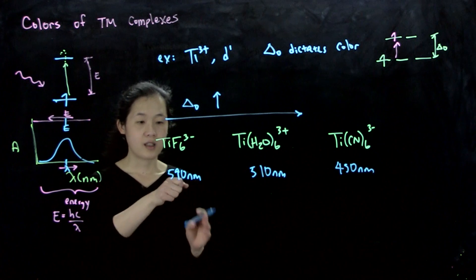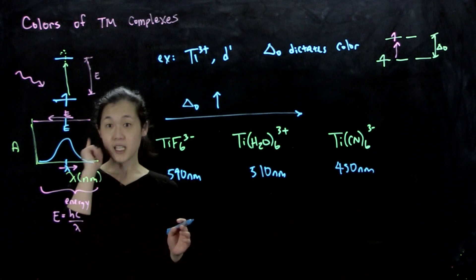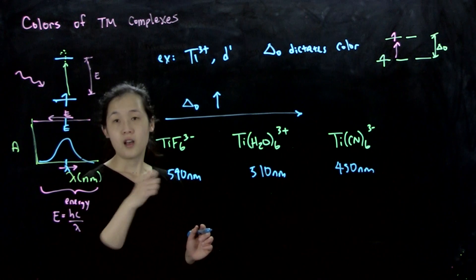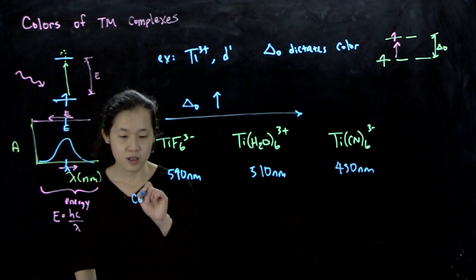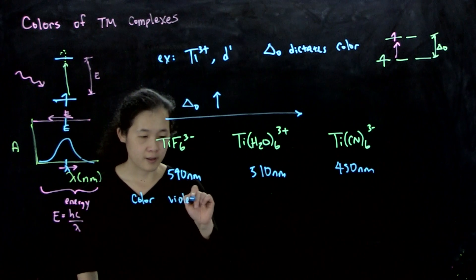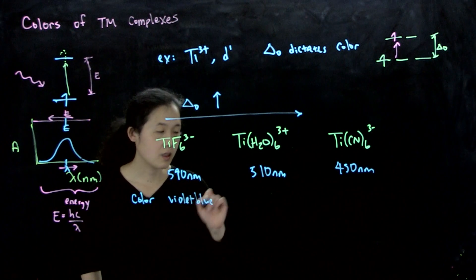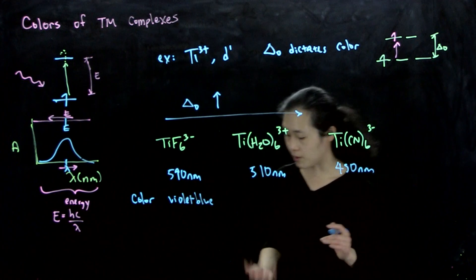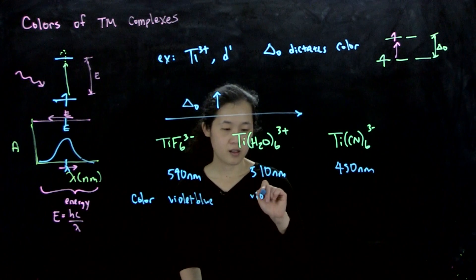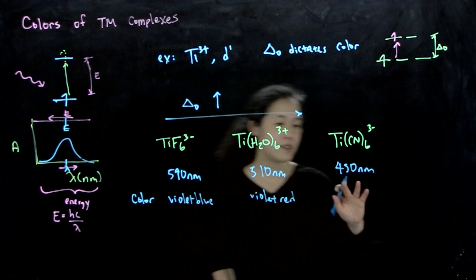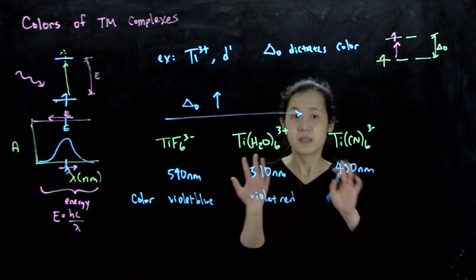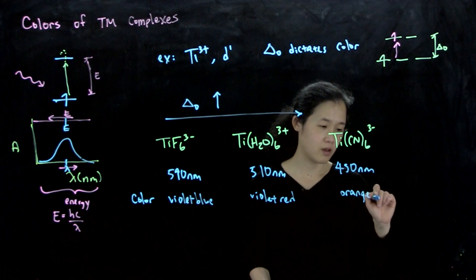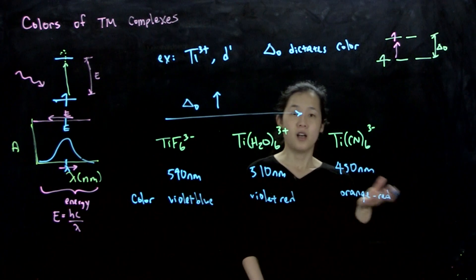Keep in mind that what you see is what the photons that are not absorbed. So if this absorbs 590, which is red photon, what we'll see is that this color is going to be violet-blue. 510 nanometers is a green photon, so we're absorbing green, so we'll see the complementary color, what's remaining. This is about violet-red. And then 450 is a blue photon, so if it absorbs blue, we see red. So overall, this is kind of orange-red.